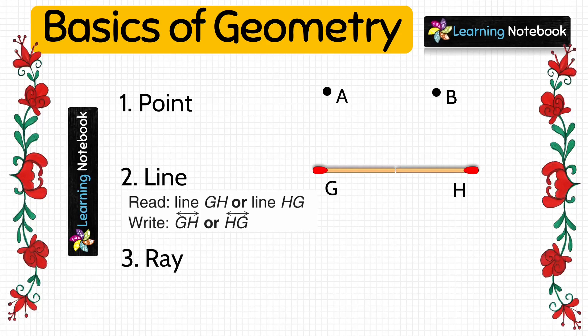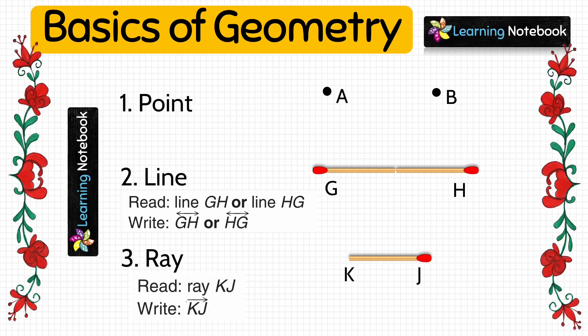Next we have 'ray'. A ray is a part of a line that has a starting point and goes on forever in one direction. Let's take one matchstick and paste it to form ray KJ, where K is the starting point. We read this as ray KJ and write it as KJ with a small ray on it.